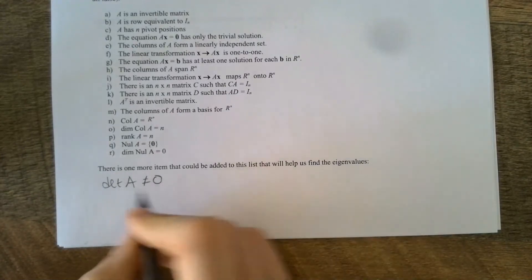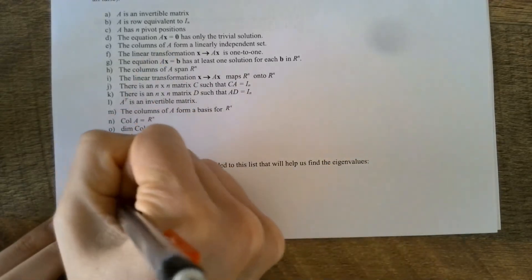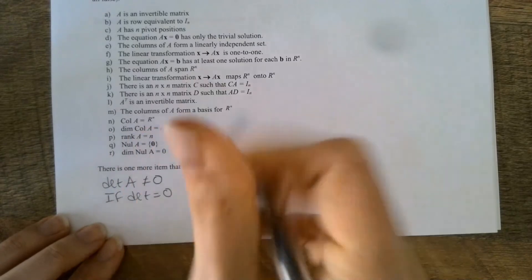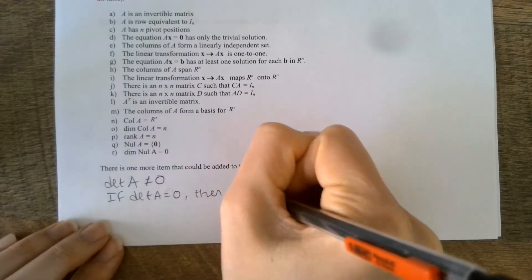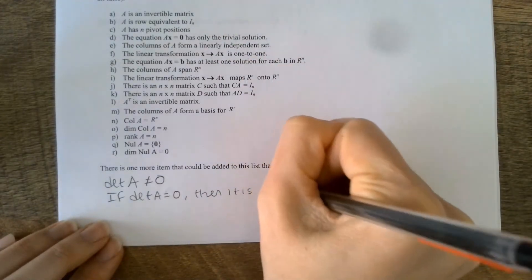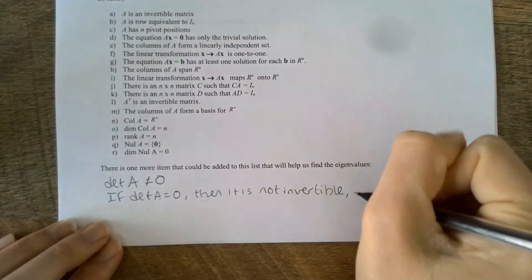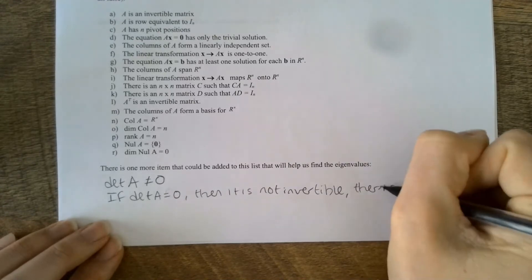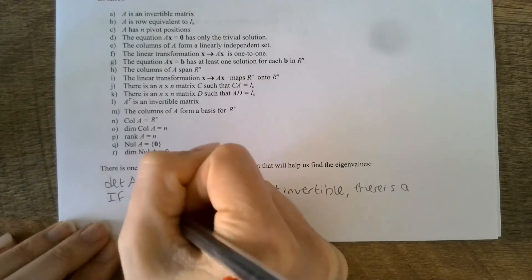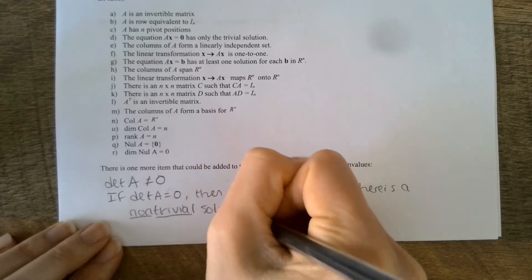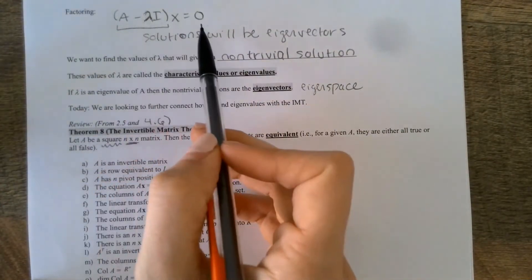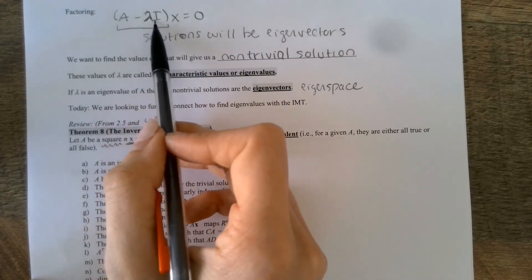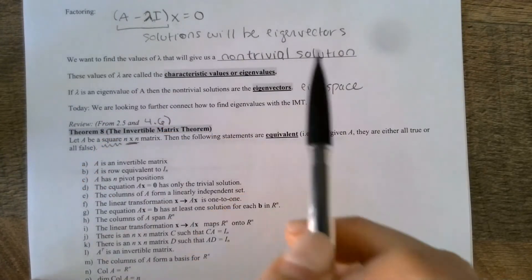And that is: if a matrix is invertible, you know that the determinant of A is not zero. A lot of you have used that on a quiz or test to prove that a matrix is invertible. So if the determinant of a matrix is equal to zero, then it is not invertible — all these statements are false — which means there is a non-trivial solution to Ax equals zero. That is related to what we wanted: we wanted to find non-trivial solutions to this matrix equation.